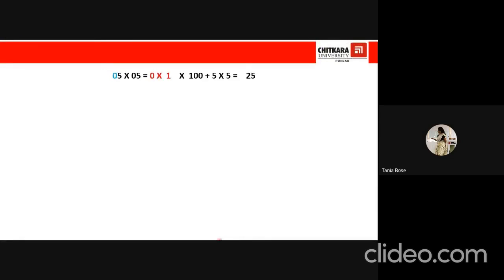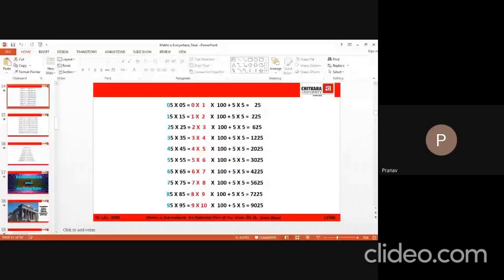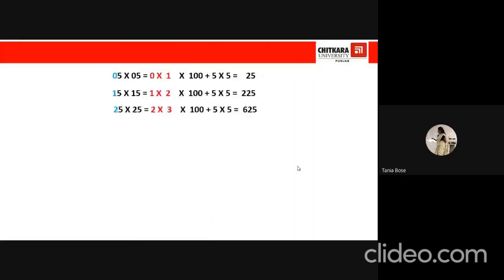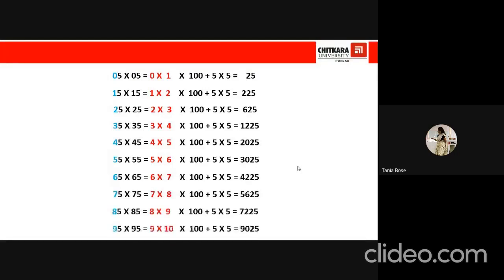Let's see the next one. This was the multiples of 5. Next is, look at the sparkle. The amount in line 51 into 51, the answer is 2601. How is it? We are writing it as 25 plus 1 into 100 plus 1 into 1.